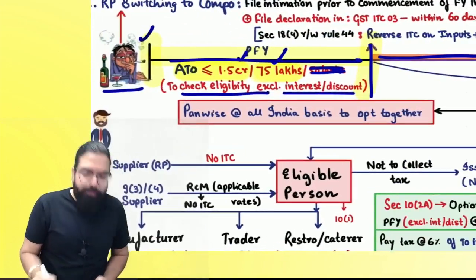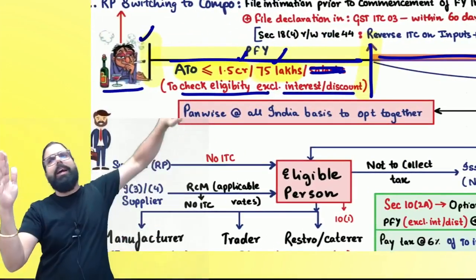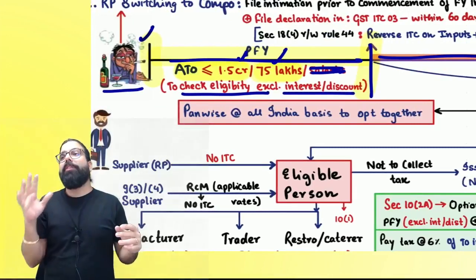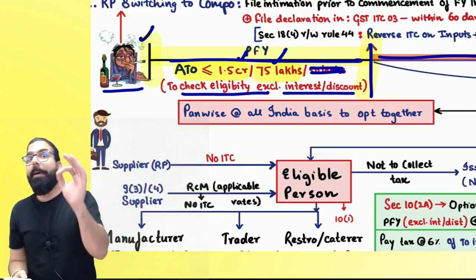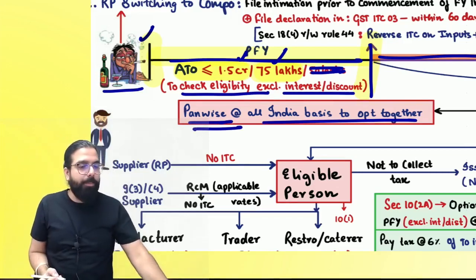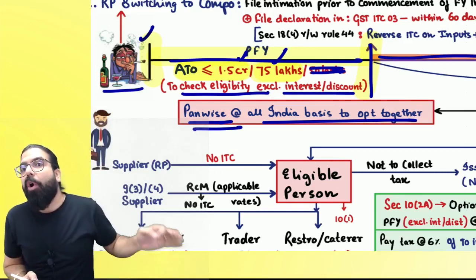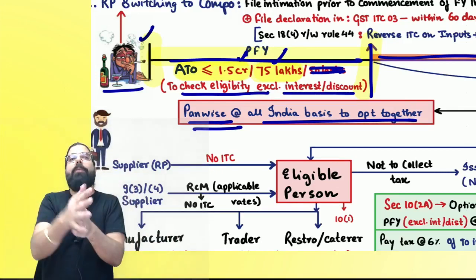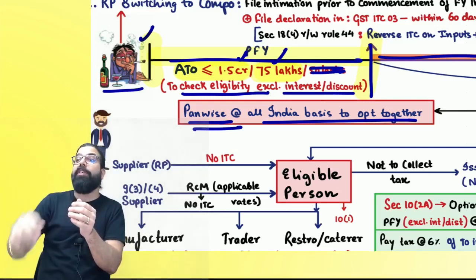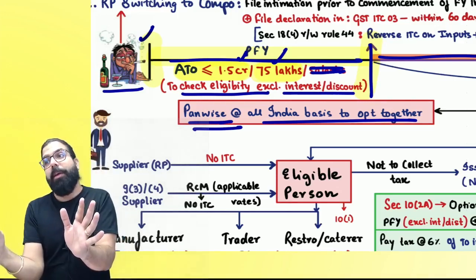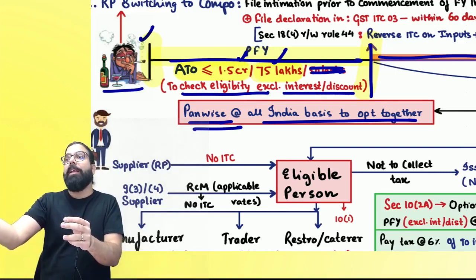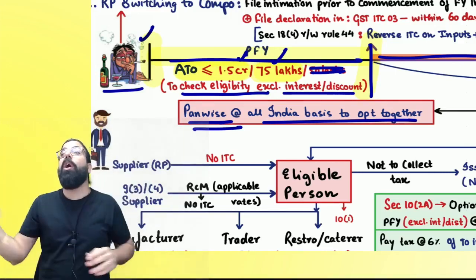If my turnover in the preceding financial year is up to 1.5 crore or 75 lakh, in the current financial year I will get an option to take the Composition Scheme. If going for Composition Scheme, remember: pan-wise, all-India basis, all registrations have to be opted together. If I have registrations in Karnataka, Delhi, and Assam, all will come under Composition Scheme — I can't keep some normal and some under composition.